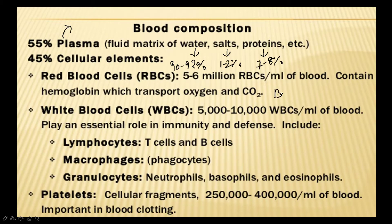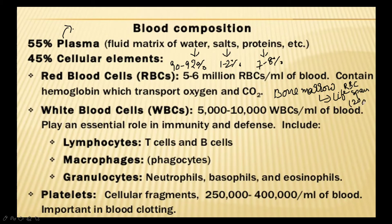RBCs have an average lifespan of 120 days. RBCs contain hemoglobin, which is a respiratory pigment consisting of iron. Heme means iron and globin is a protein present in the blood. Hemoglobin is responsible for the transportation of oxygen.